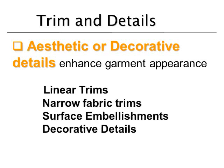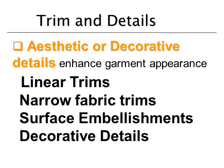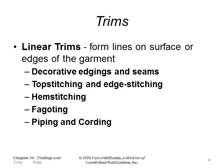Aesthetic or decorative details enhance the overall garment appearance. The main categories we'll go over are linear trims, narrow fabric trims, surface embellishments, and decorative details. Starting with linear trims, the main types are usually found on the edges or seams of garments.